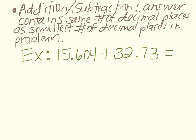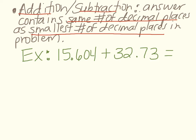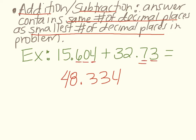The first set of rules is if you are adding or subtracting in your problem. Your answer needs to contain the same number of decimal places as the smallest number of decimal places in the problem. Here we have an example of 15.604 plus 32.73. If you type that in the calculator, you should get 48.334. Looking back at the problem, this number has three decimal places and this number has two, so the one with the lowest number of decimal places determines how many we'll have in our answer.